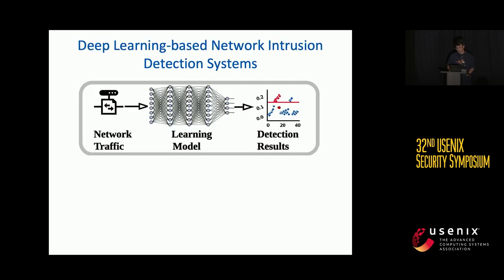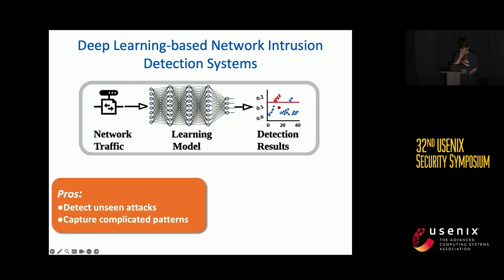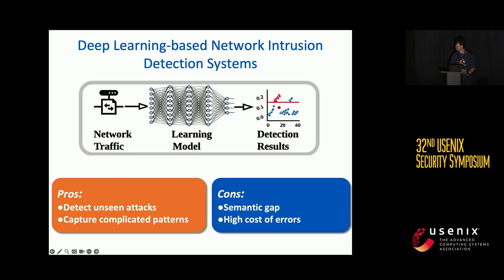In recent years, we see a lot of research about deep learning-based network intrusion detection systems, which have shown remarkable performance. As you can see, network traffic is fed into a deep learning model, which assigns scores or labels to the input and then classifies them. In comparison to signature-based or statistics-based ones, deep learning models offer several advantages, such as detecting unseen attacks and capturing complex patterns. However, they have two drawbacks: the asymmetry between the detection result and actionable interpretations, and the high-cost errors.